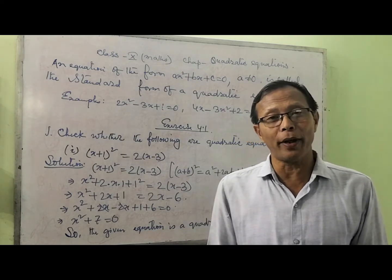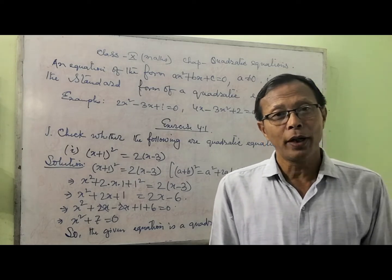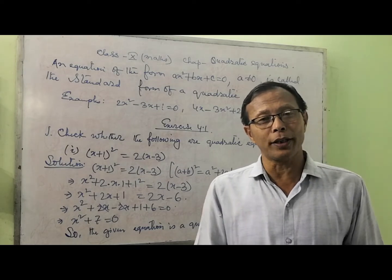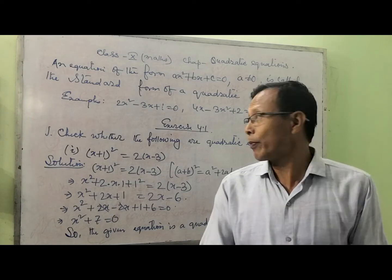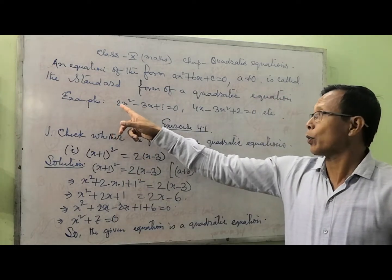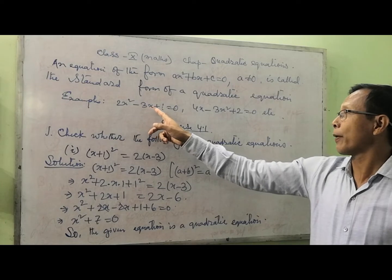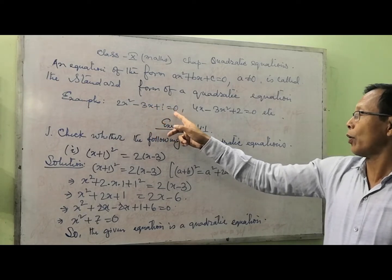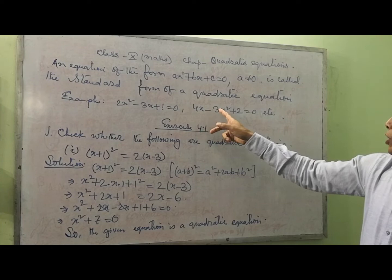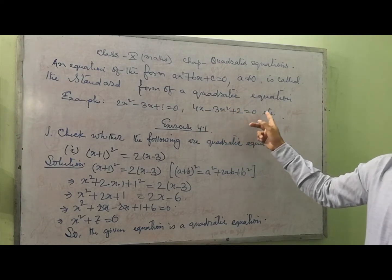An equation of the form ax squared plus bx plus c equal to 0, where a is not equal to 0, is called the standard form of the quadratic equation. Here I will give you one example: 2x squared minus 3x plus 1 equal to 0, or 4x minus 3x squared plus 2 equal to 0.